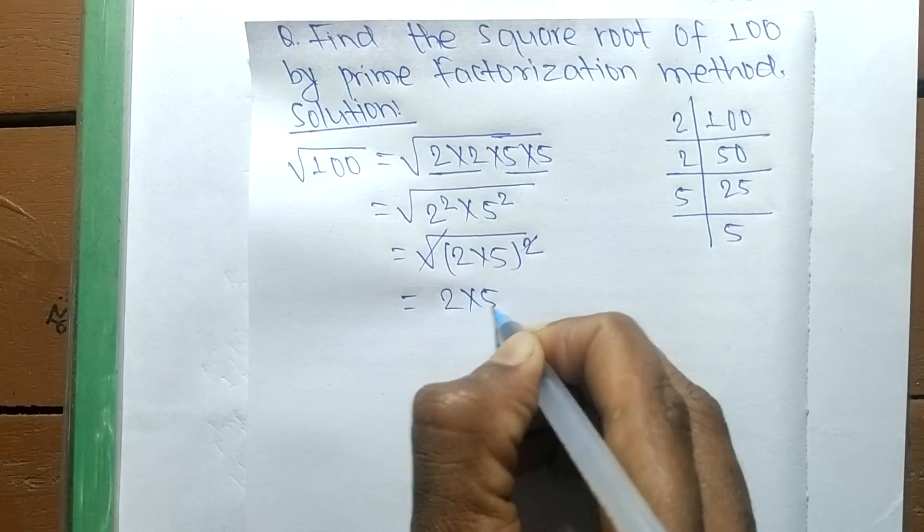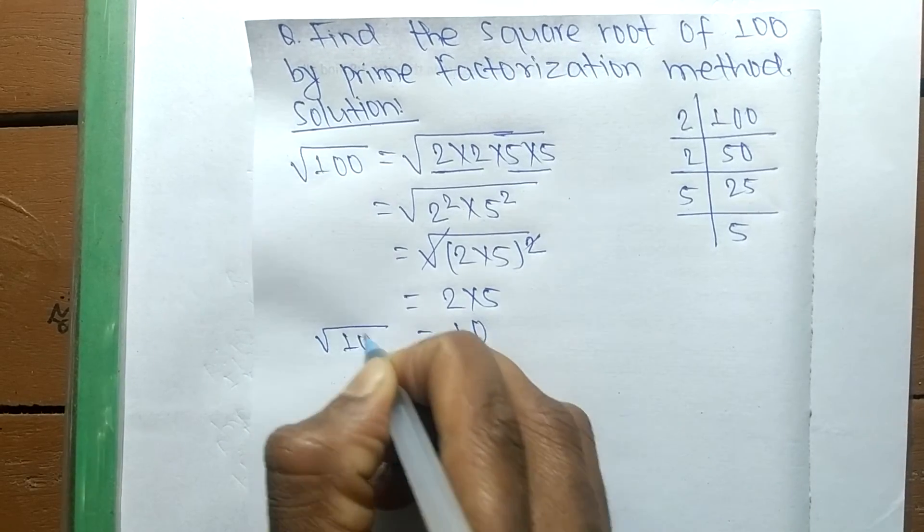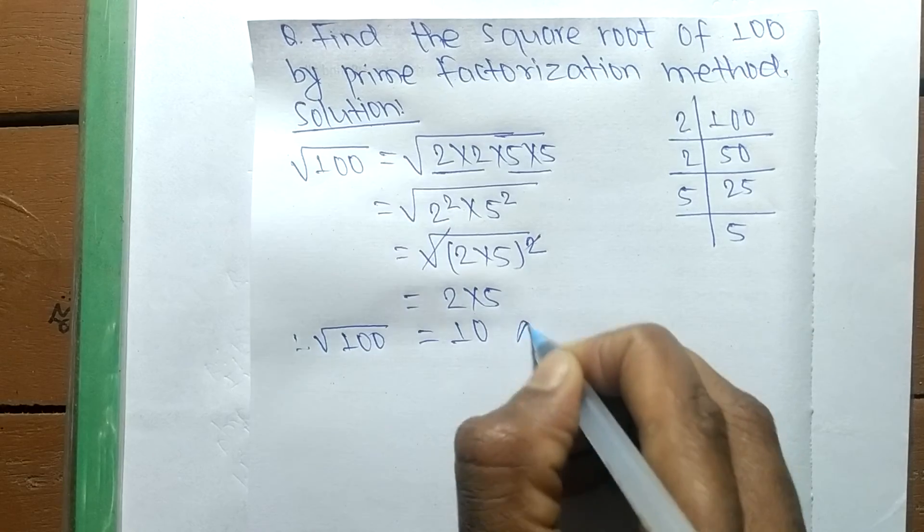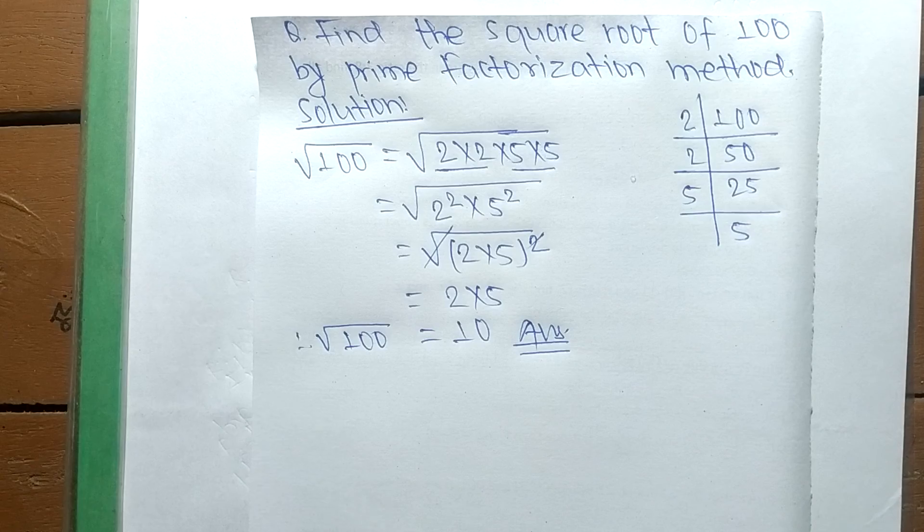So it is equal to 10. The square root of 100 is equal to 10. This much for today and thanks for watching.